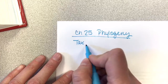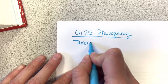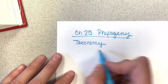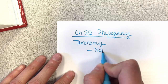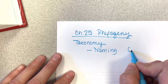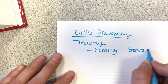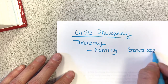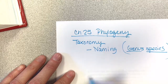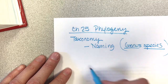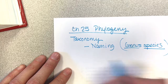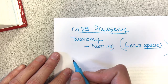Remember we have the naming system, the binomial naming where we go genus and then species. For example, we are Homo sapiens — the first part is the genus and the second part is the species.